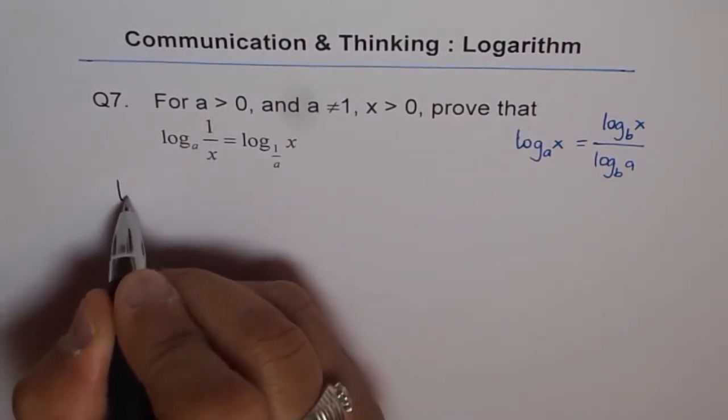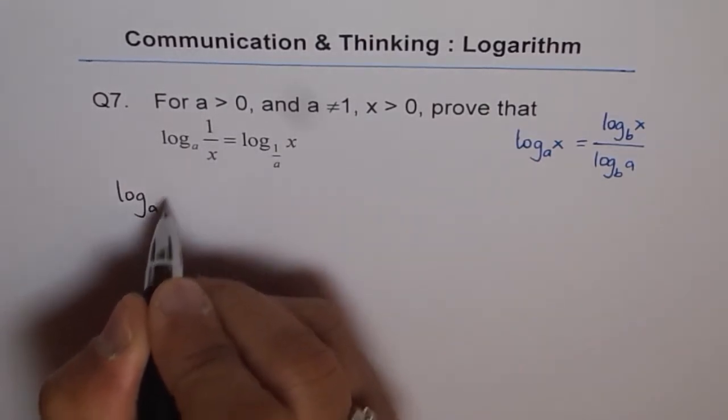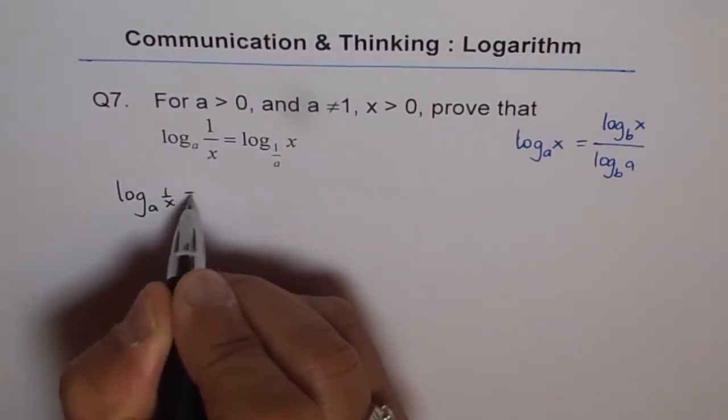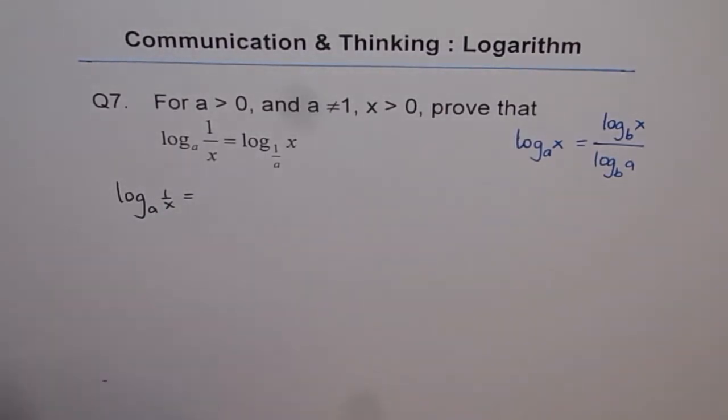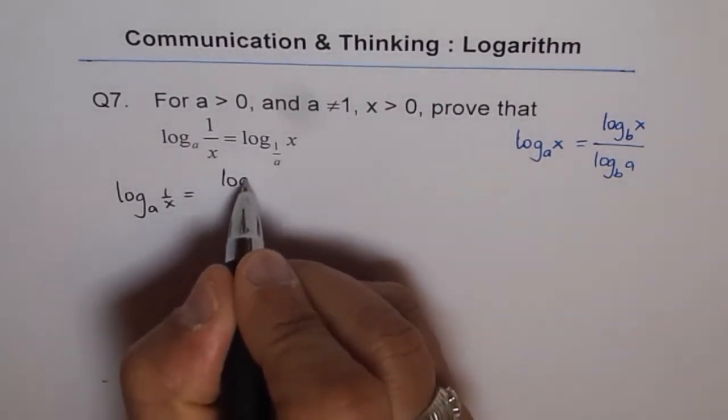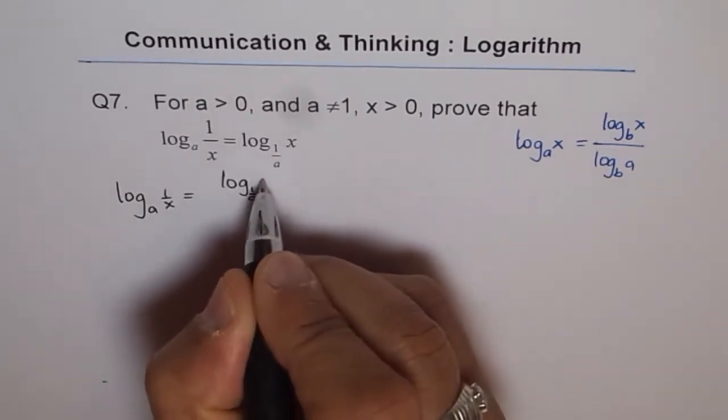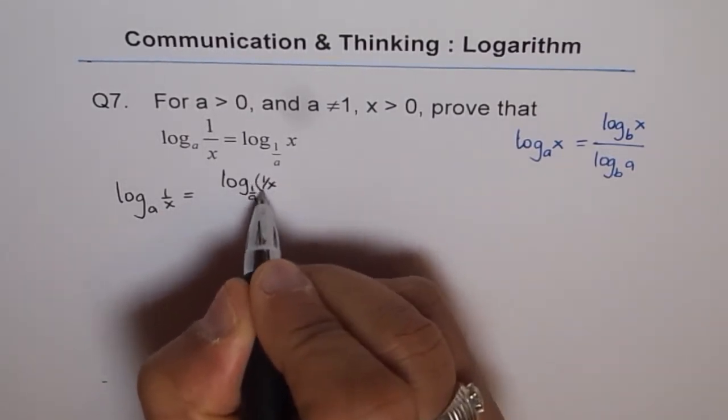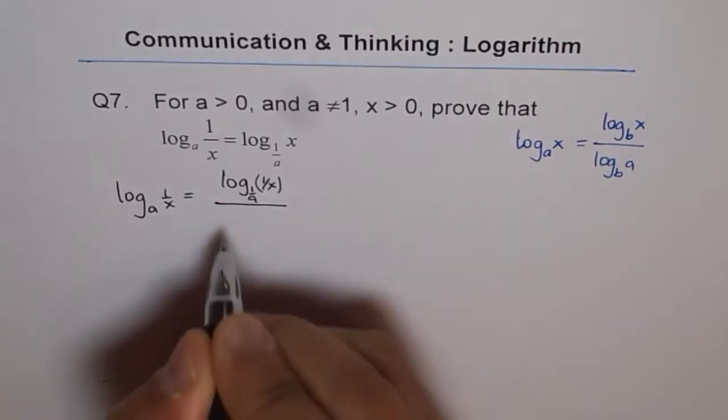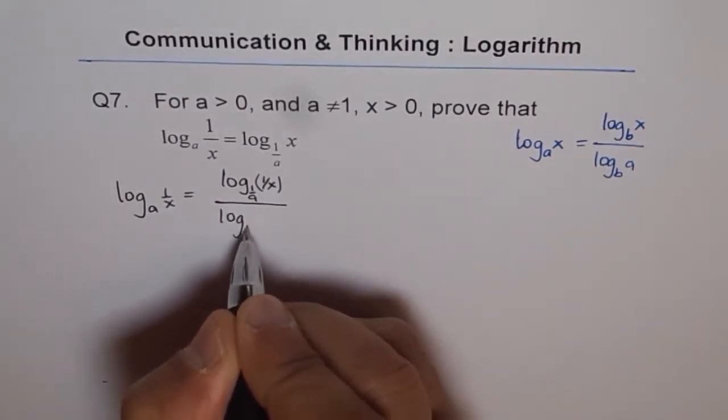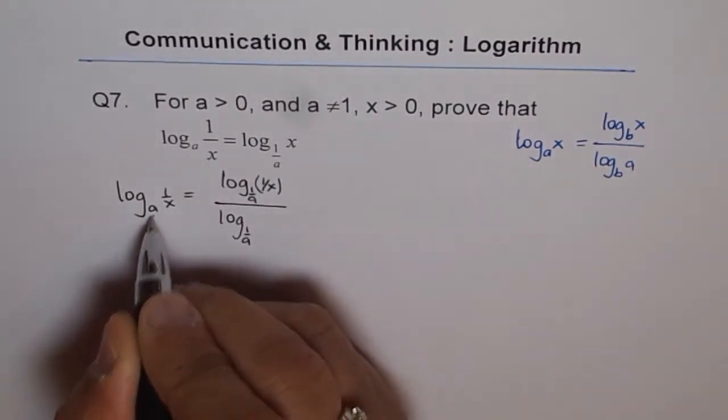Let's start with the left side. We have log_a(1/x). So we will change the base to 1 over a. We can write this as log_(1/a)(1/x) divided by log_(1/a)(a).